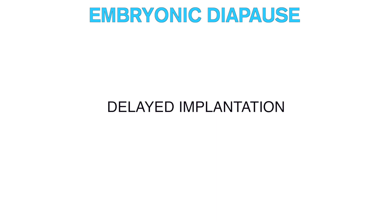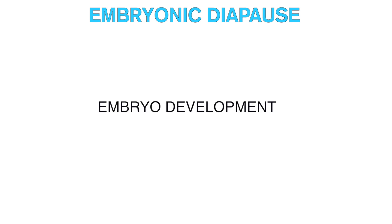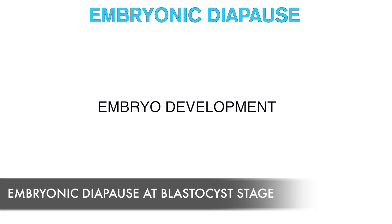In this video we'll be discussing embryonic diapause, also called delayed implantation in mammals. In this particular embryonic phenomenon that exists in some mammals, the embryo development is halted — it gets arrested temporarily at the blastocyst stage, where the embryo enters dormancy for some reasons that will be discussed in the later part of the video.